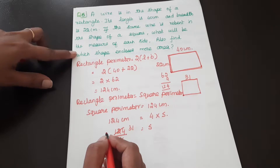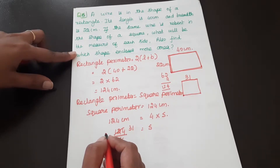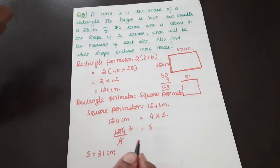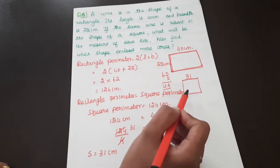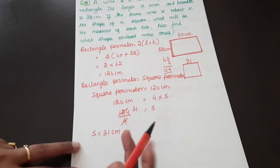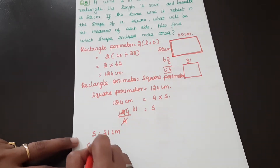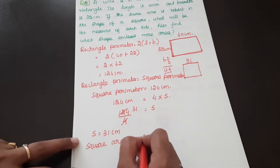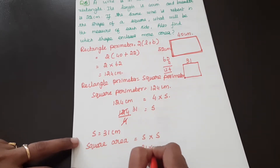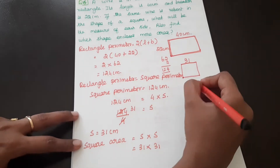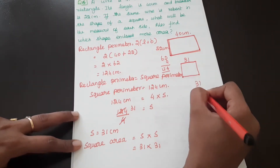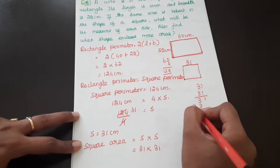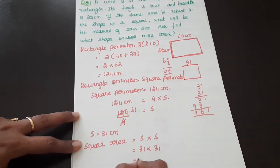Also find which shape encloses more area. Area of square equals S into S, so 31 into 31 equals 961 centimeters squared.